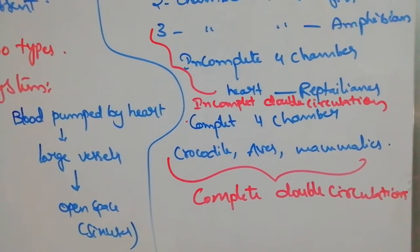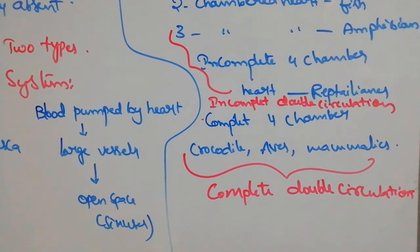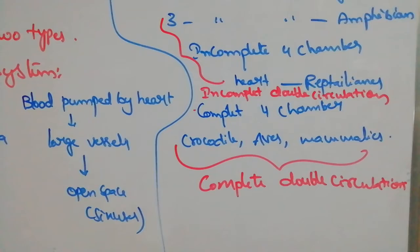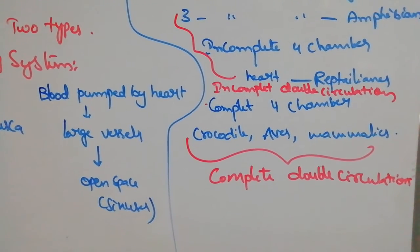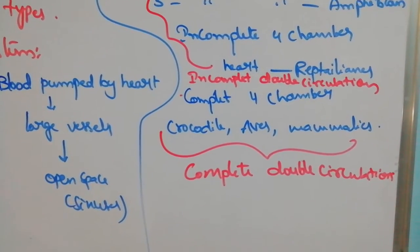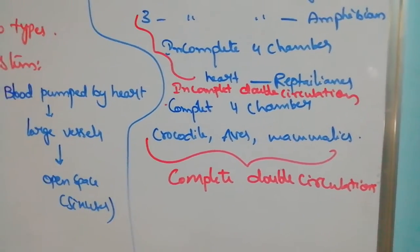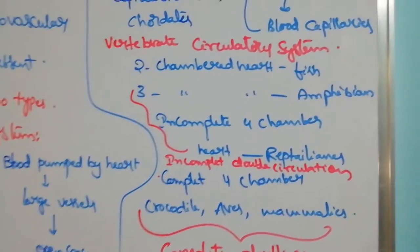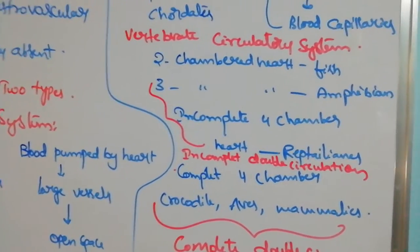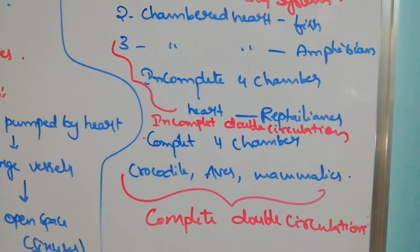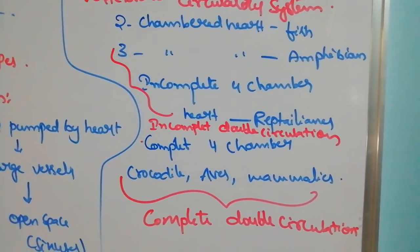Aortic arches are present to supply blood to the body. Atria and ventricles are completely divided. Complete double circulation takes place in crocodiles, birds, and mammals. Two-chambered heart in fishes, three-chambered in amphibians, incomplete four-chambered in reptiles with incomplete double circulation.